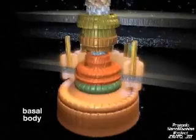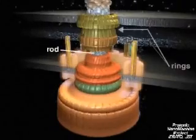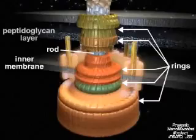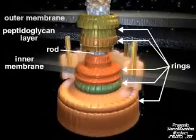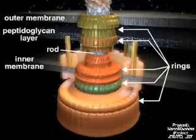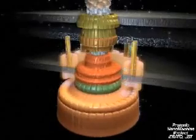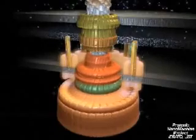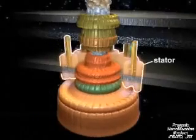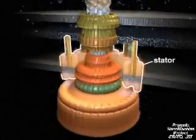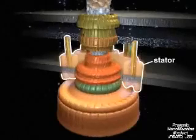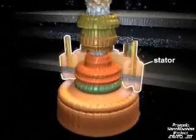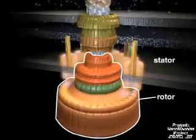The basal body consists of a rod and a series of rings embedded in the inner membrane, the peptidoglycan layer, and the outer membrane. Some of the rings make up the flagellar motor, which can be divided into two major parts: the stator, which is attached to the peptidoglycan layer and remains stationary, and the rotor, which rotates.